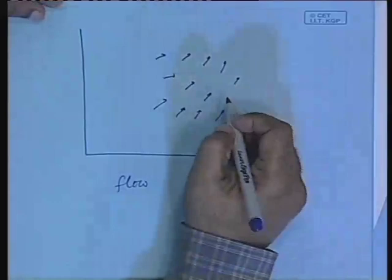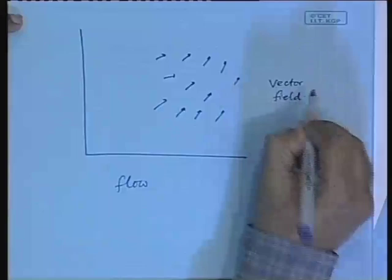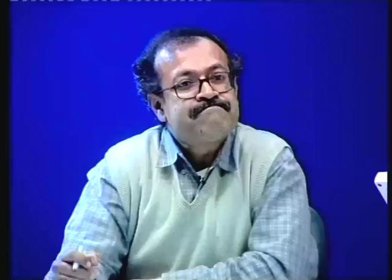In literature you will find the word 'flow' — sentences like 'let us define a flow.' What is a flow? It is nothing but a set of differential equations. When a set of differential equations is given, it defines a vector at every point in the state space. That is why it is also called a vector field.